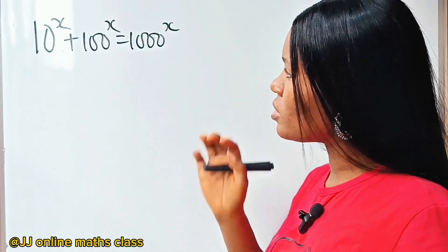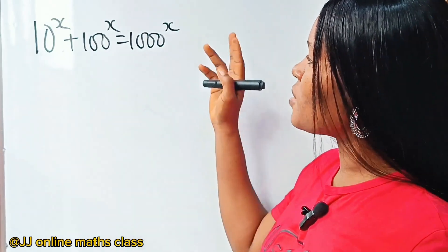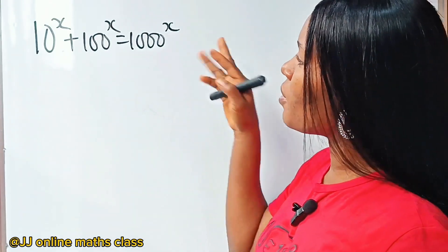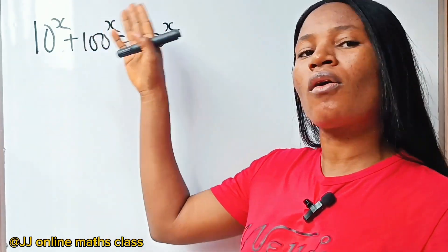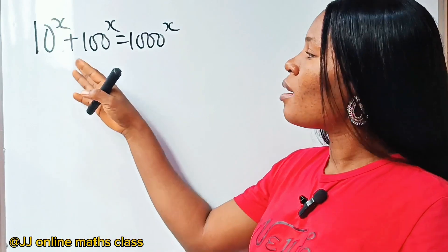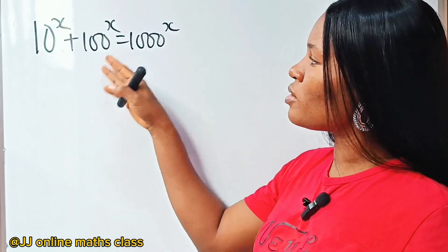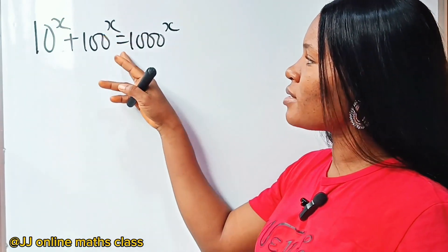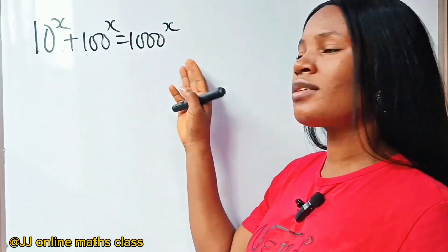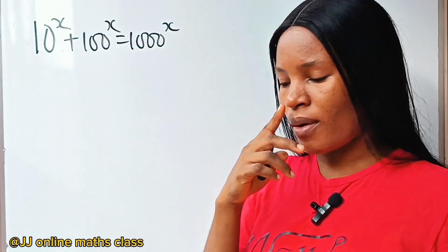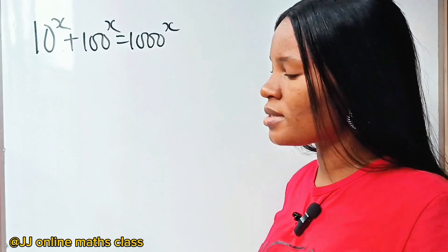This is a Maths Olympiad question. We are asked to find the value of x if 10 to the power of x plus 100 to the power of x is equal to 1000 to the power of x.